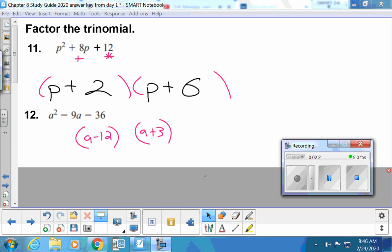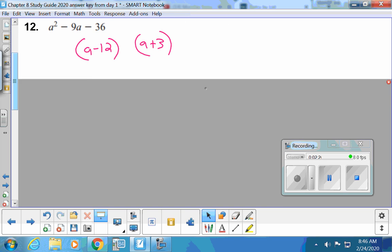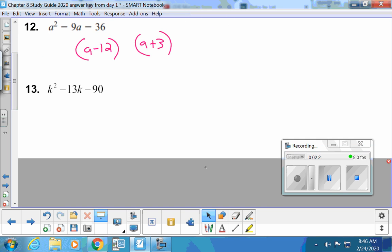All right, good job making the 12 be the negative number and the 3 be the positive number on that one. That's a bigger number. If you need to use your calculator to experiment with the combinations, please do that.